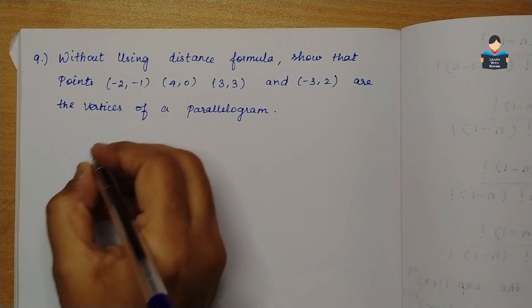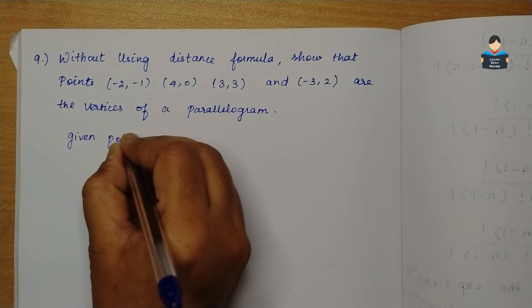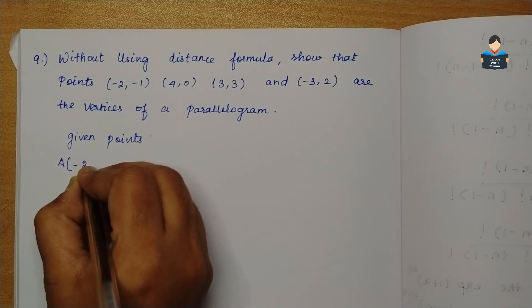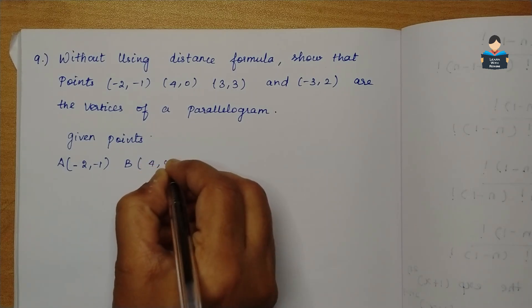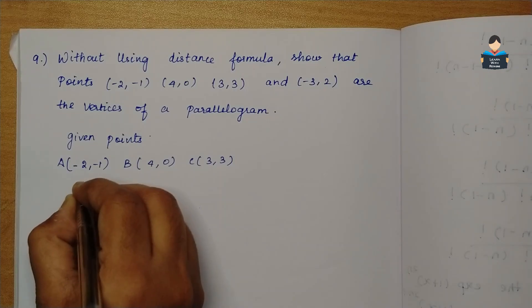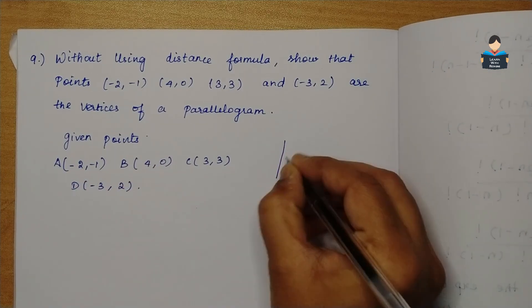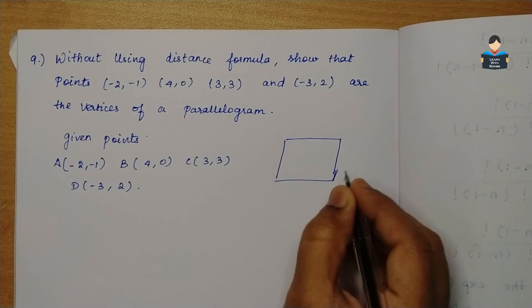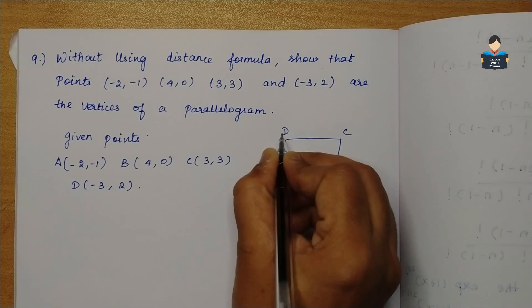Given points: A is minus 2, minus 1; B is 4, 0; C is 3, 3; and D is minus 3, 2. So we have parallelogram ABCD.